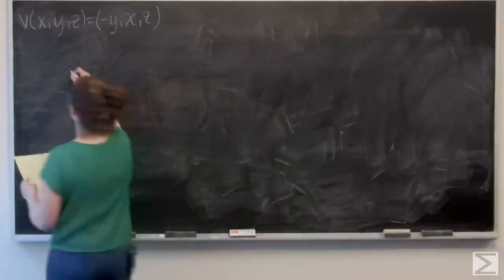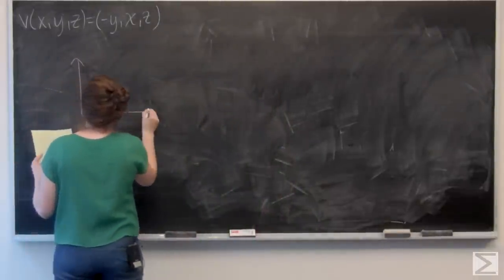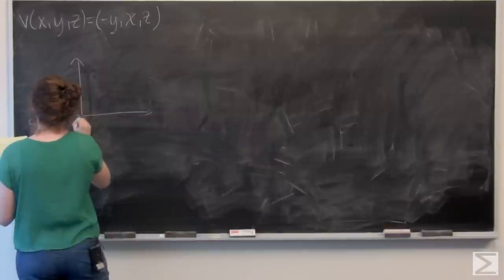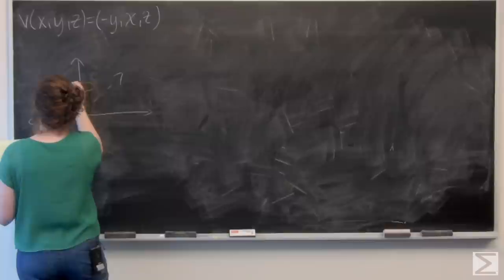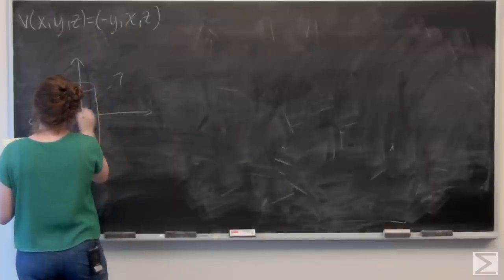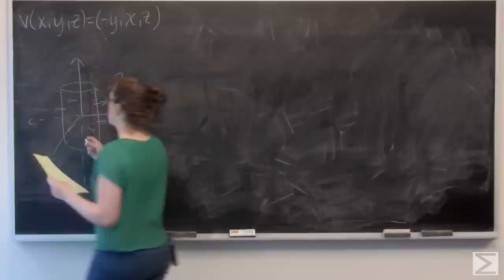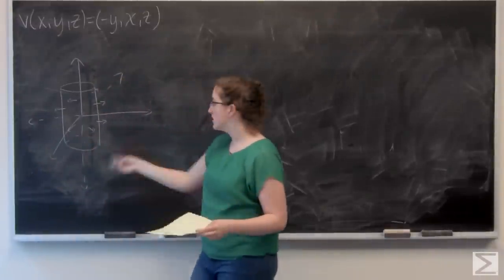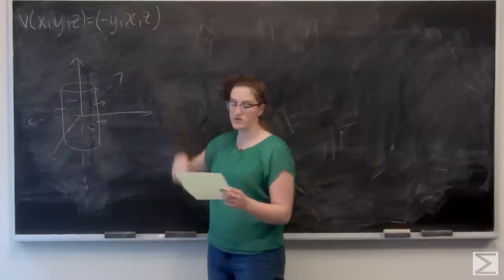So I'm going to go ahead and draw that. So I've got this cylinder centered around the z axis. Radius 5 goes from z equals negative 7 to z equals 7.